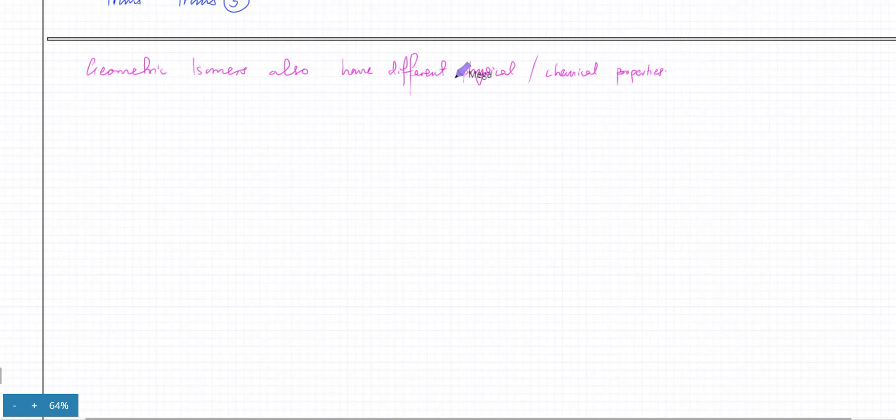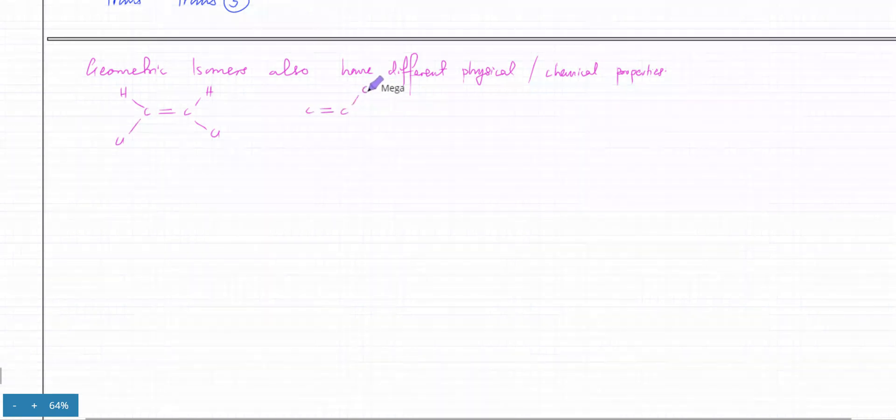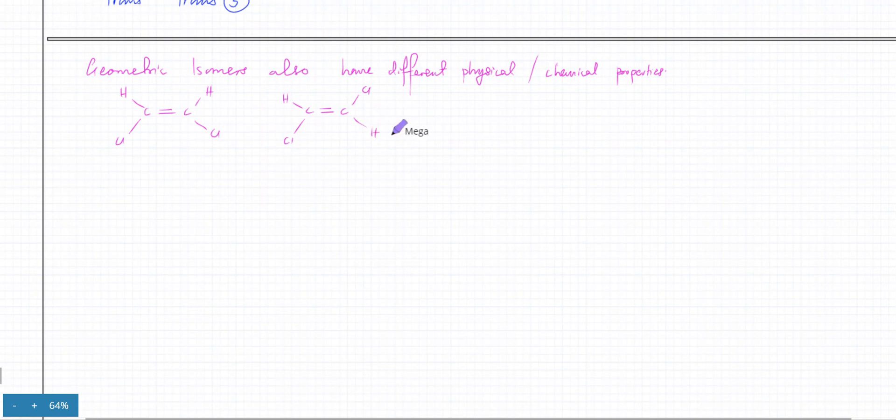What that means is if I have an example where they have exactly the same structural formula—one example is you have a cis molecule and another molecule which is trans, where the groups are pointing in opposite directions even though they're connected to the same carbon atom. So they both have exactly the same connectivity, but this one is cis and the other one is trans. Can anyone explain to me why